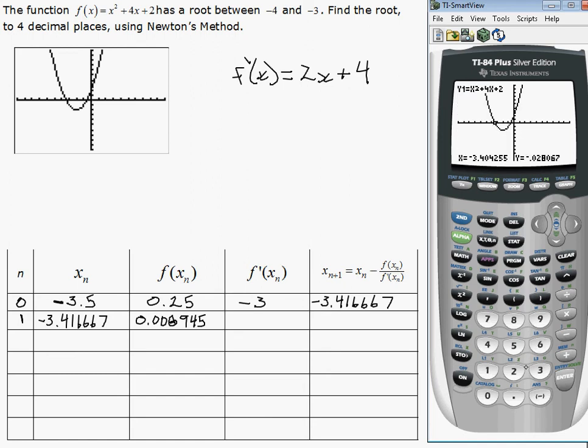And then we want to calculate the derivative, so number 6, at negative 3.416667. And that gives us that answer, negative 2.833334. And we go back to our home screen again, second, quit.